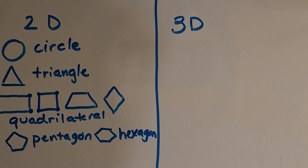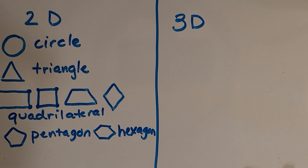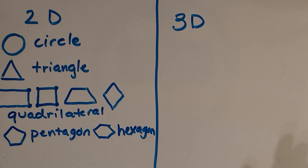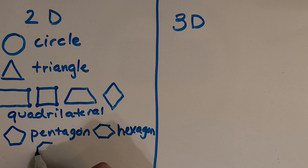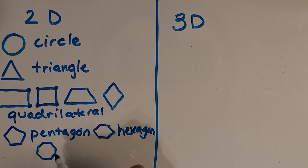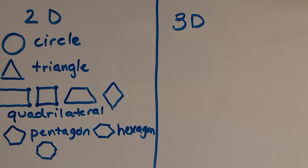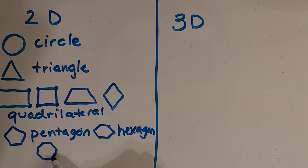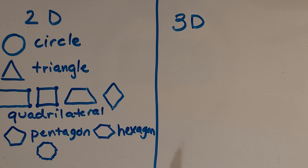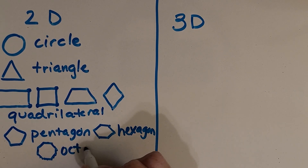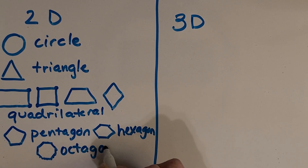I've got one more common shape that you're probably familiar with — it's like a stop sign. Do you know the name of that one? Let's count the sides first: one, two, three, four, five, six, seven, eight. It's an octagon! Those are all of our 2D shapes that we're going to be focusing on today.